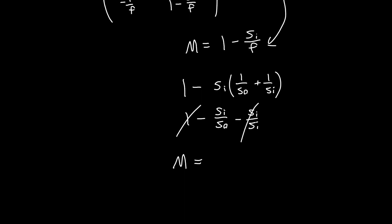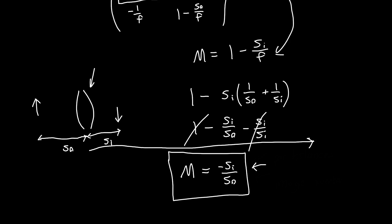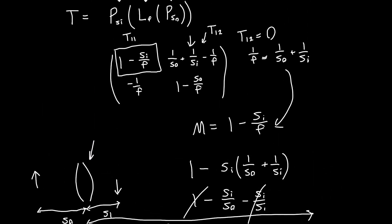So the magnification for a thin lens system is just minus sI over sO — really elegant. This means that if we have an object on one side of the lens and the image is formed on the other side, so sI and sO are both positive, then the image is going to be inverted because the magnification is negative. It also means that if we want really high magnification from a single thin lens, sI is going to have to be huge for a given sO. This result holds for a thin lens system in air or any constant refractive index medium. The more general form of magnification is always the T11 term of the transfer matrix.